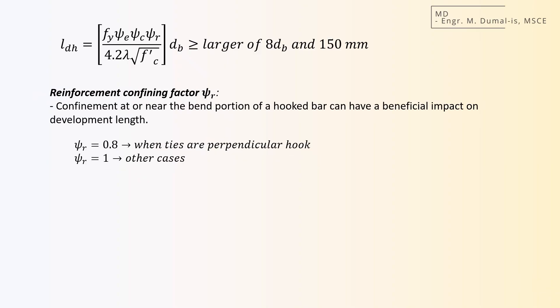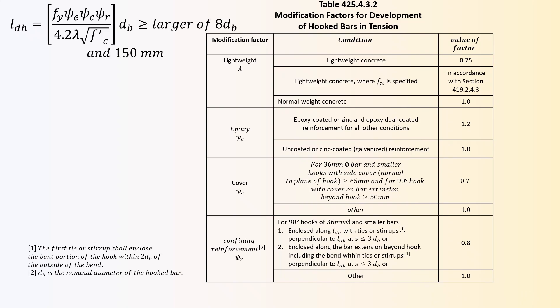So here is the reinforcement confining factor, ψr. This accounts for the fact that confinement at or near the bend portion of a hooked bar can have a beneficial impact on development length. The values shall be 0.8 when ties are perpendicular and 1 for other conditions. Here is the summary for the provisions for hook under 425.4.3.2. You may compare this with the provision of ACI 318.